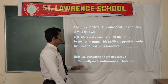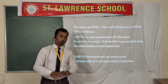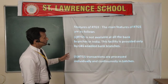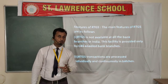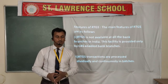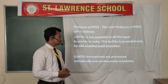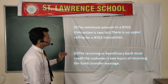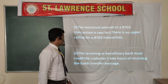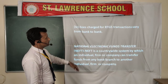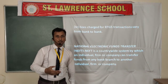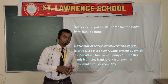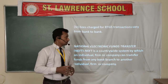Regarding the features of RTGS: RTGS is not available at all bank branches — only those banks that have the RTGS facility can be used. The minimum amount for RTGS is 2 lakhs, though this has changed and other transaction types are now available. The receiver or beneficiary bank must credit the customer's account within 2 hours. The fee charged for RTGS transactions varies from bank to bank.